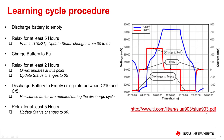Here is the procedure to perform a learning cycle. First, discharge the battery to empty and relax for at least 5 hours. Then enable IT — the update status changes from 00 to 04. Now charge the battery to full and relax for at least 2 hours. The Qmax updates at this point and the update status changes to 05.